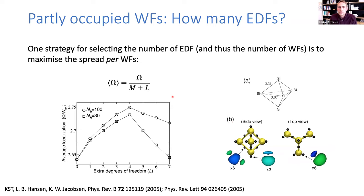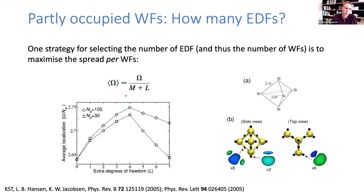The question is how many extra degrees of freedom should we include. One way to define the optimal number of Wannier functions is to maximize the spread per Wannier function — this expression here. Here's an example for a silicon Si5 cluster, where the average localization is plotted as a function of the extra degrees of freedom included. It peaks at four extra degrees of freedom, and with that choice we get nicely symmetrically positioned and highly localized Wannier functions.